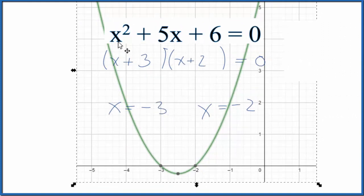If you put minus 3 in for x, minus 3 squared plus 5 times minus 3 plus 6, that'll equal 0. If you put minus 2 in, minus 2 squared plus 5 times minus 2 plus 6, that'll also equal 0.